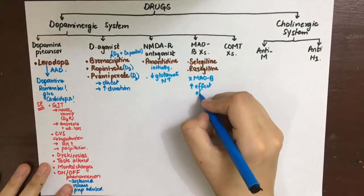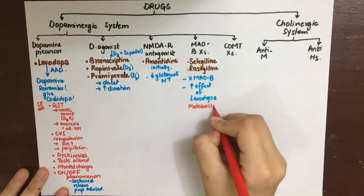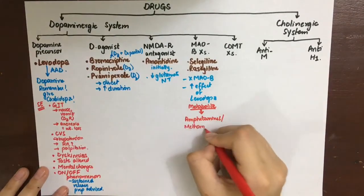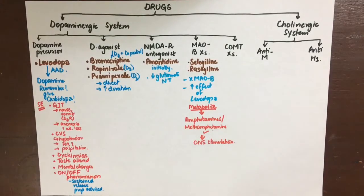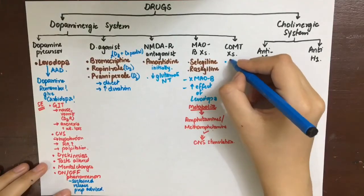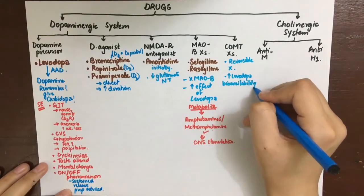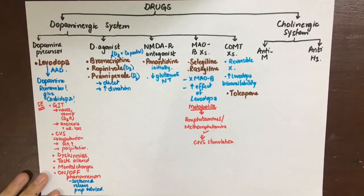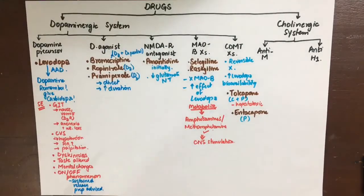MAO-B inhibitors — selegiline and rasagiline — prevent dopamine degradation by MAO-B, increasing dopamine concentration in the CNS. A drawback is that their metabolites are amphetamines, which as CNS stimulants cause insomnia, anxiety, nausea, and vomiting. COMT inhibitors — tolcapone and entacapone — are reversible COMT inhibitors that increase levodopa bioavailability. Tolcapone acts both centrally and peripherally, while entacapone acts only peripherally. A notable adverse effect of tolcapone is hepatotoxicity.